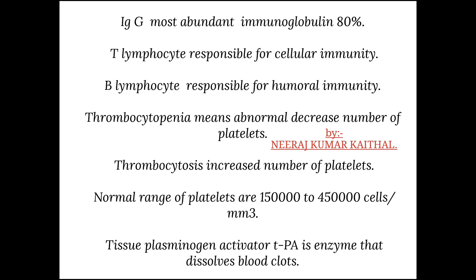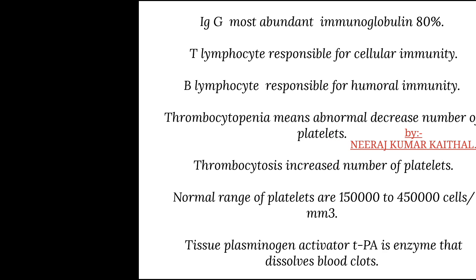Thrombocytopenia means an abnormal decreased number of platelets, while thrombocytosis refers to an increased number of platelets. Normal range of platelets is 1,50,000 to 4,50,000 cells per mm cubed. Tissue plasminogen activator (t-PA) is an enzyme that dissolves blood clots.